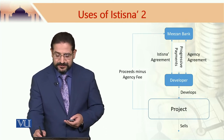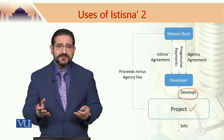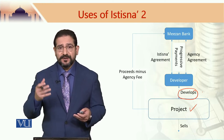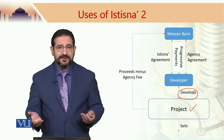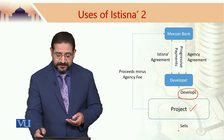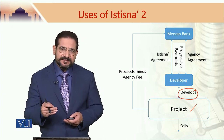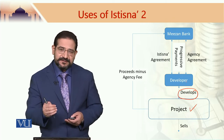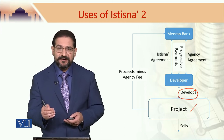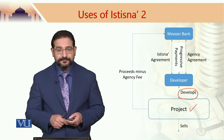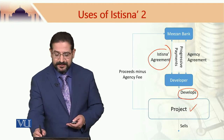The developer is responsible for developing the project — it could be a 30-storey commercial building on II Chandrigarh Road, or another commercial complex in Islamabad. Whatever be the case, the developer develops this property and Mizan Bank finances this development by way of progressive payments to the developer as per the istisna agreement between the developer and the bank. Remember, there is an istisna agreement between the bank and the developer, and there is also an agency agreement.